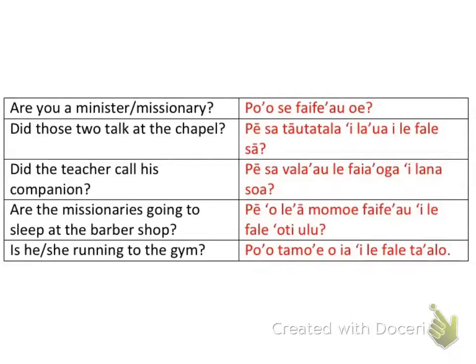Here are the answers. First: 'Are you a minister or a missionary?' Next: 'Did the teacher call his companion?' Then: 'Are the missionaries going to sleep at the barbershop?' And the last one is a question — it should have a question mark — 'Is he/she running to the gym?' Sorry I didn't have a question mark there, it's a small mistake.